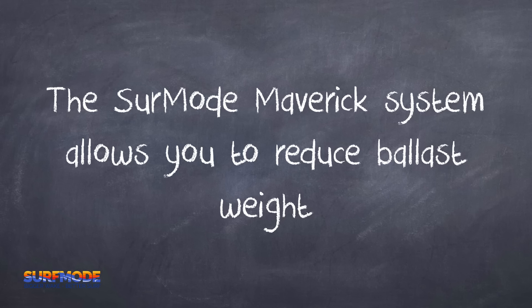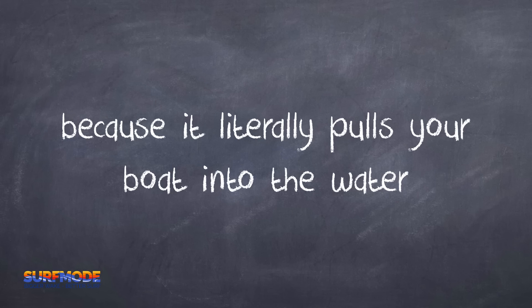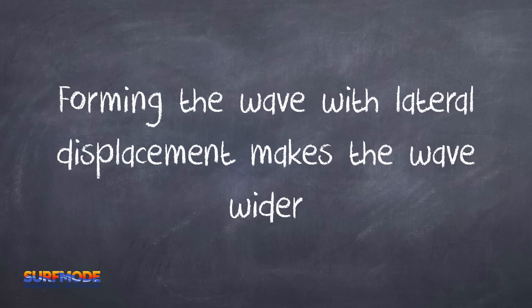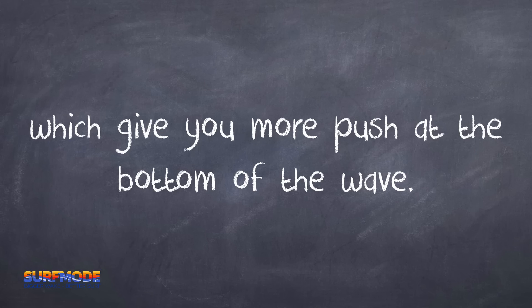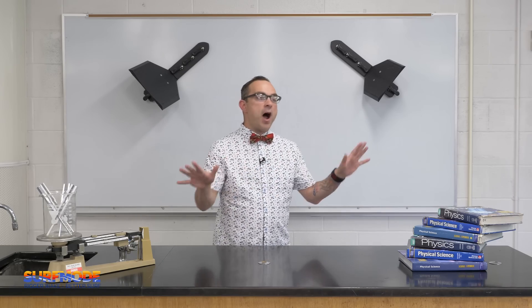The Surf Mode Maverick system allows you to reduce ballast weight because it literally pulls your boat into the water, keeping it there, and lets your hull drive the wave. Forming the wave with lateral displacement makes the wave wider, which gives you more push at the bottom of the wave. Alright, I cannot do that voice anymore. Done with it.